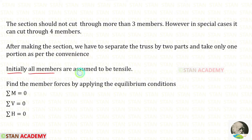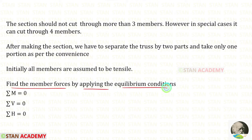Initially all the members are assumed to be tensile. If we get a positive value, that means our assumption is correct and the member force is tensile. If we get a negative value, that means our assumption is incorrect and the member force is compressive. To find the member forces we have to apply the equilibrium conditions: summation of moments is zero, summation of vertical forces is zero, and summation of horizontal forces is zero.